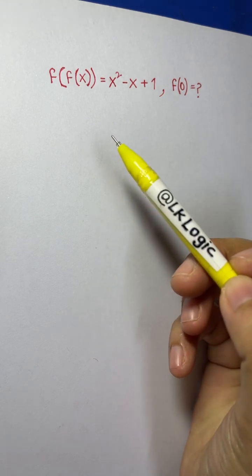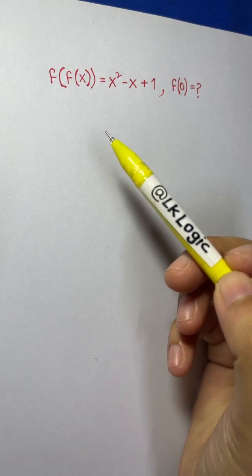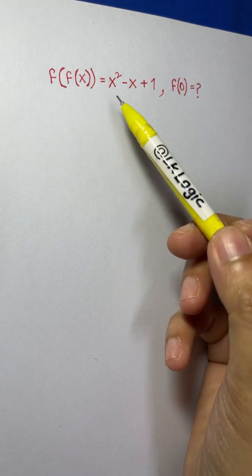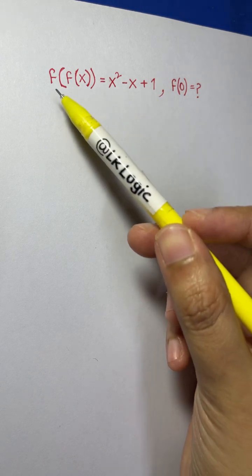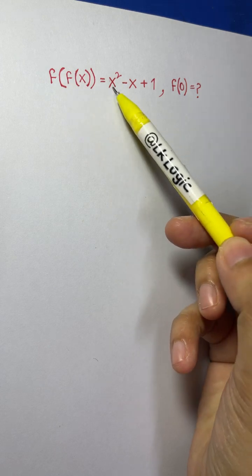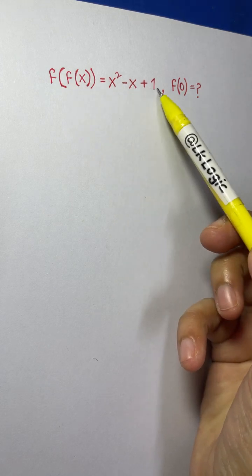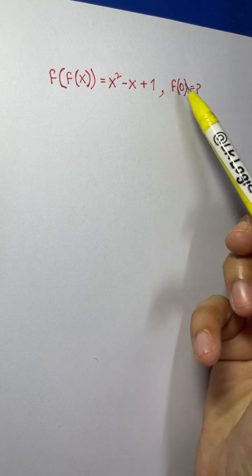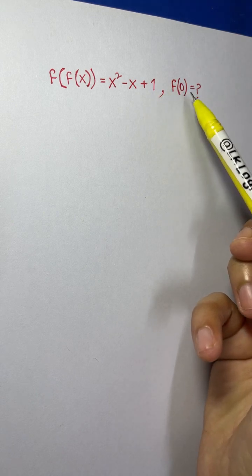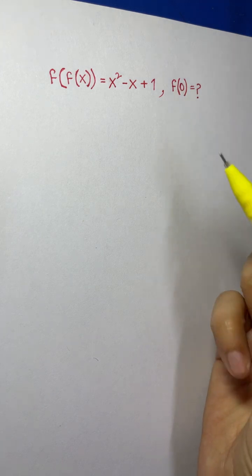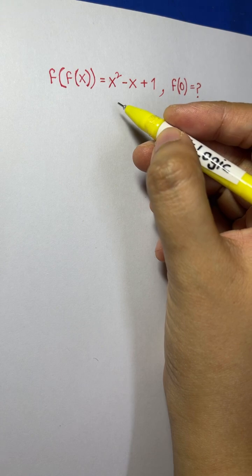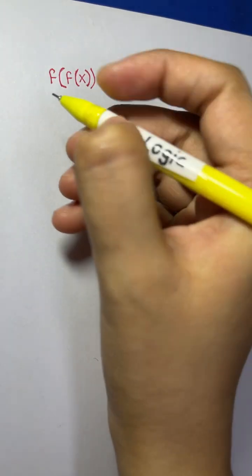Hi everyone. In this live session we're going to solve a nice problem on functions. We have been given f(f(x)) = x² - x + 1, and we need to find f(0).